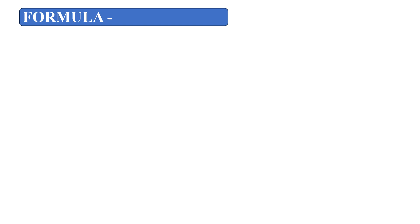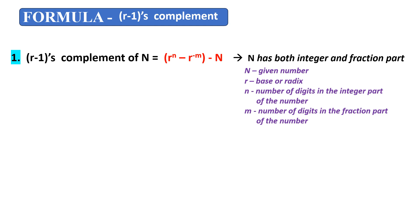Diminished radius complement is also called the r minus 1's complement. Now we are going to learn the formulas to find the r minus 1 complement of numbers in different number systems. The first formula is: to find the r minus 1 complement of a number N is r to the power of n minus r to the power of minus m minus N. Here, if the number N has both the integer and fraction part, we use this formula. r is the base or radix, n is the number of digits in the integer part, and m is the number of digits in the fraction part.